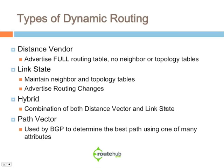There are four main types of dynamic routing: distance vector, link state, hybrid, and path vector. For distance vector, that routing protocol advertises its full routing table, changes or not, every certain interval of time, and there are no neighbor or topology tables built. Link state solves many of the faults of distance vector. It maintains neighbors and contains a topology table where it learns about the entire network and uses its algorithm to determine the best possible path.